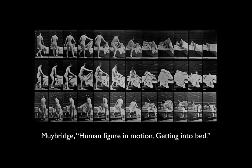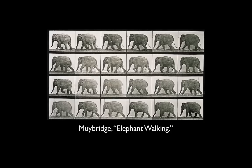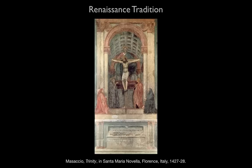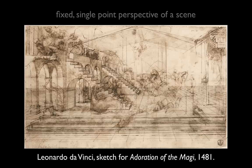Muybridge continued his studies with financial backing from the research community and published volumes of locomotion studies of human figures and animals in motion. By the 1890s, he was joined by scientist Marey, who took things one step further. Unlike Muybridge's single sequential photographs, Marey devised a method of recording a figure moving through space on a single sensitized plate. His innovative approach to representing time in a single image broke more than 400 years of tradition that began in the Italian Renaissance, when still images were aimed at representing a view of nature from a single fixed point. Those days were now over.